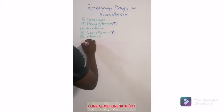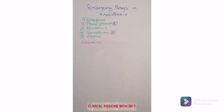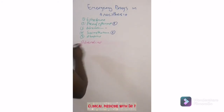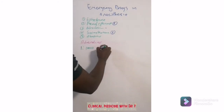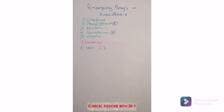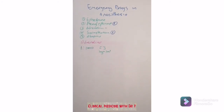The next one is adrenaline. The common adrenaline that you're going to find, the strength is 1:1000, which is the concentration. This means that 1 milligram equals 1 mL. So each vial of adrenaline has got 1 milligram.